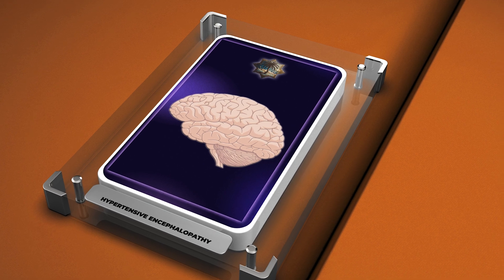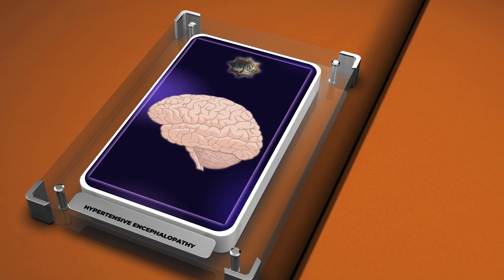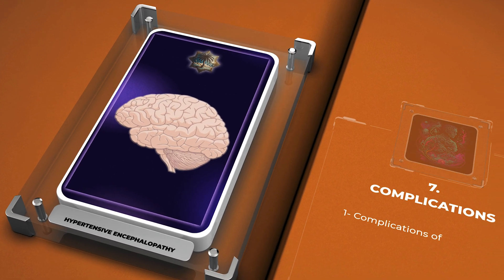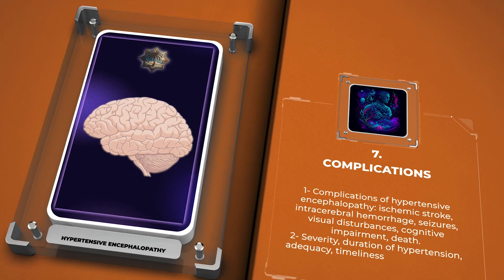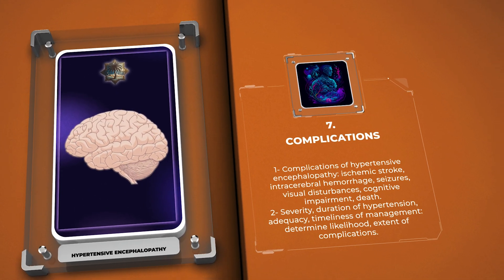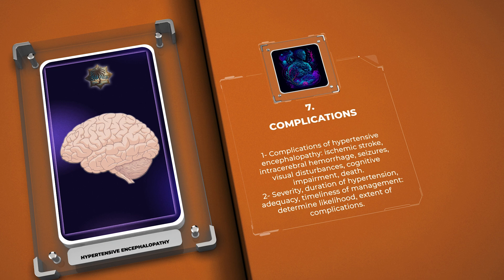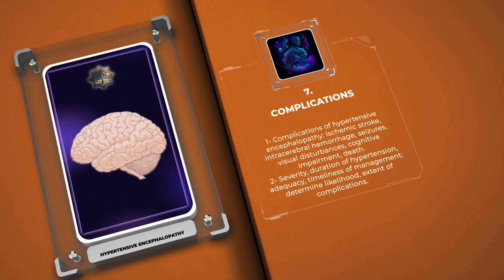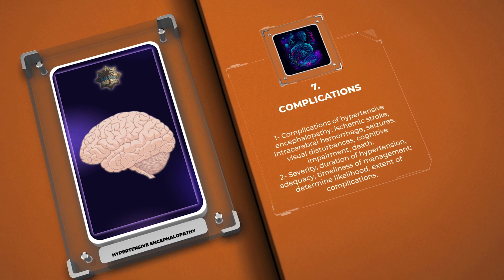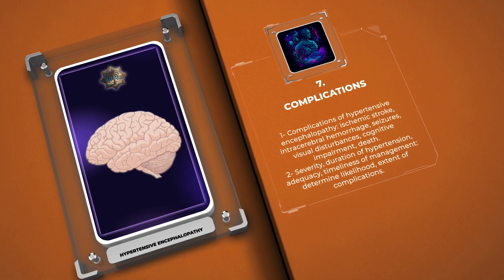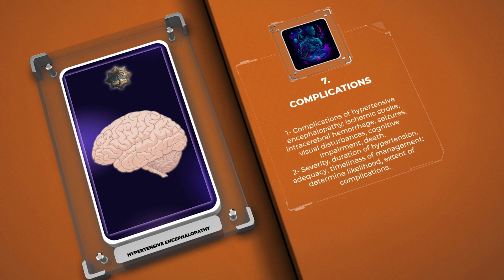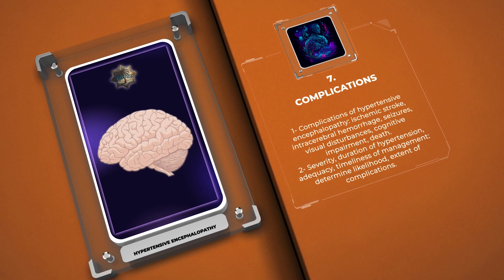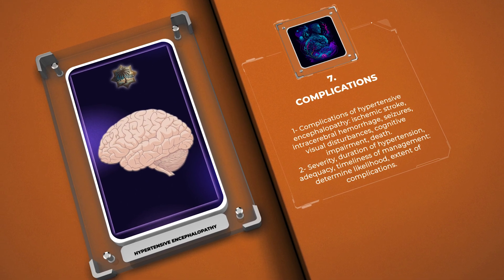Hypertensive encephalopathy can lead to various complications if not promptly managed. These complications may include ischemic stroke, intracerebral hemorrhage, seizures, visual disturbances, cognitive impairment, and even death. The severity and duration of hypertension, as well as the adequacy and timeliness of management, are crucial factors in determining the likelihood and extent of such complications. Early recognition and intervention can help prevent or minimize the risk of complications associated with hypertensive encephalopathy.